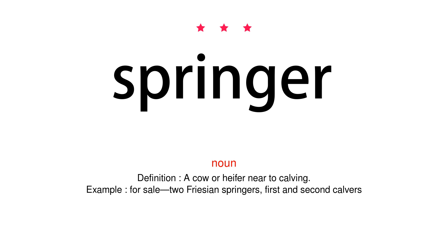Noun. Definition. A cow or heifer near to calving. Example: For sale, two Frisian Springers, first and second calvars.